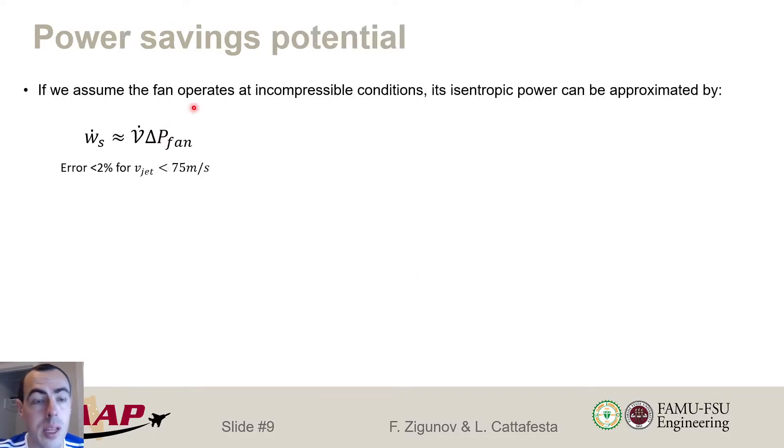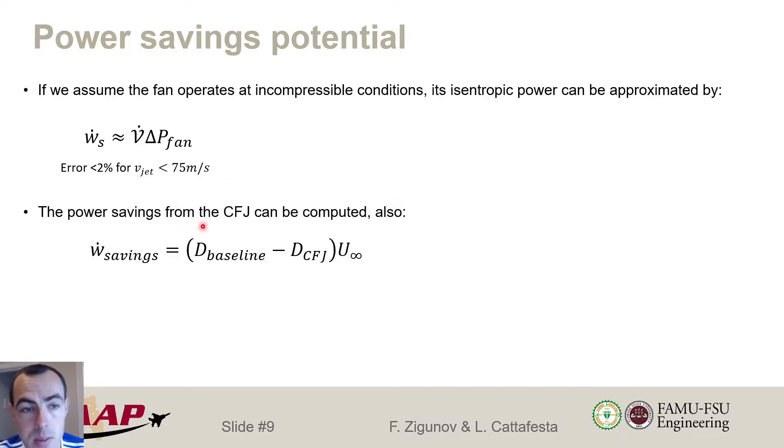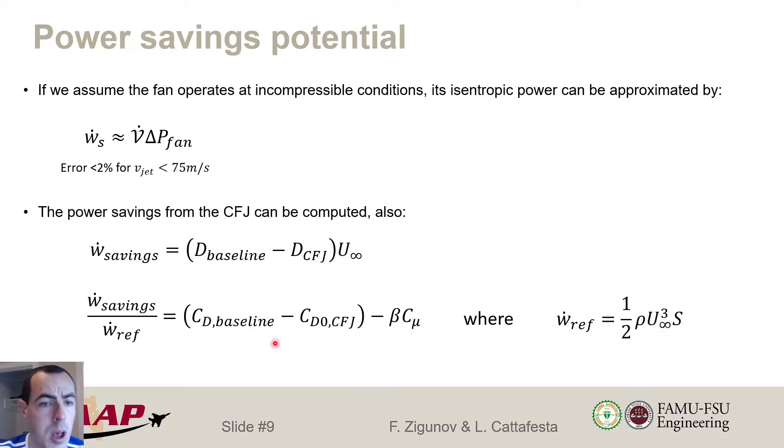Okay, so now that we looked at the forces, we can also look at the energy cost and the power savings. So if we make an assumption that the flow is incompressible, then the power required by the fan is just the isentropic pumping power of an incompressible pump, which is volume flow rate times delta P. And that has a fairly small error for low velocities, which is compatible with some cruise conditions. If we look at the power savings or the gross power savings by the co-flow jet, that would be basically comparing with some reference case, this baseline unmodified airfoil drag minus the drag produced by the co-flow jet times the free stream velocity. And we can normalize this by a reference power, which is based on the airfoil planform and the free stream velocity cubed.